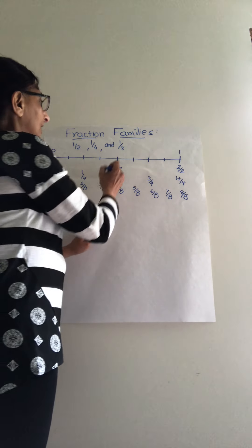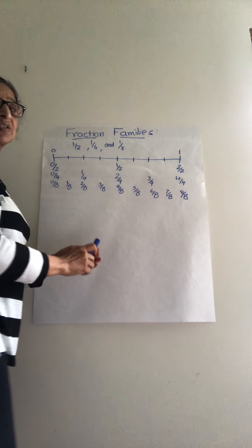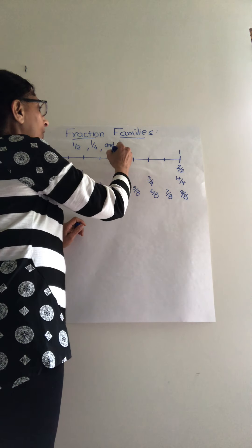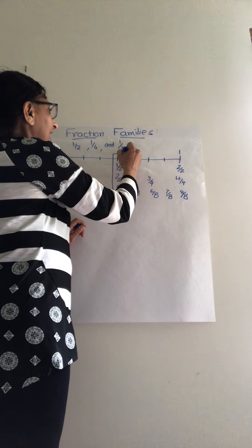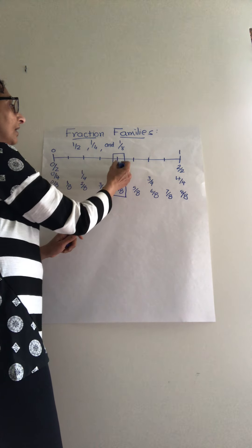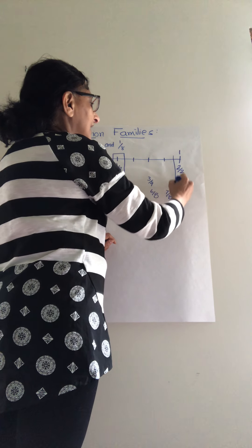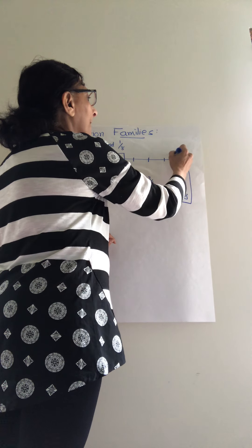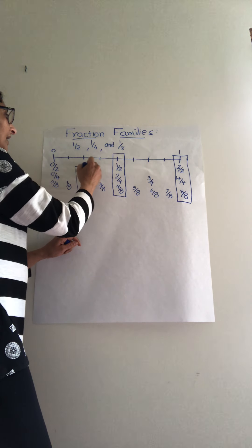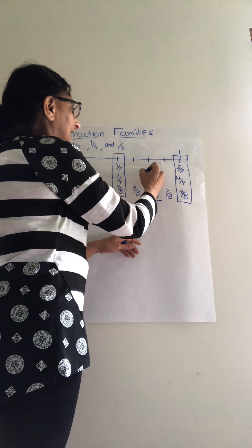You can also see some fractions that are the same, because they land on the same place on the number line. One-half, two-fourth, and four-eighth are all the same. Two-half, four-fourth, and eight-eighth equal one whole. Similarly, one-fourth and two-eighth are equivalent, and three-fourth and six-eighth are also the same.